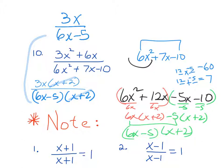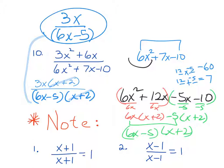Some people will be tempted to simplify 3x and 6x in (3x)/(6x − 5). You cannot do that, because 6x is attached to the −5 by the fraction bar grouping. We are done.